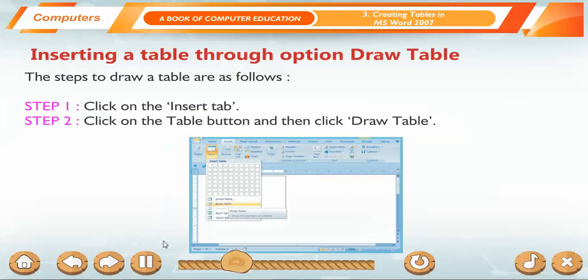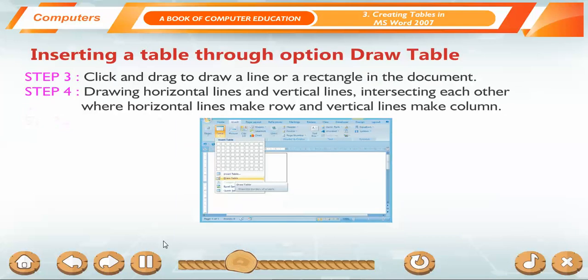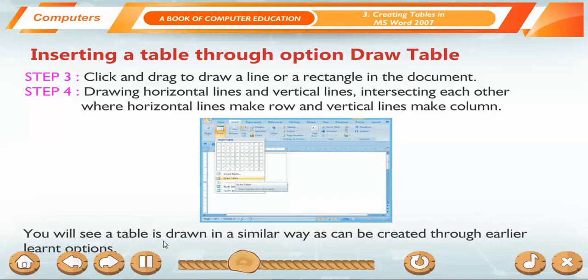The steps to draw a table are as follows. Step 1: Click on the Insert Tab. Step 2: Click on the Table button and then click Draw Table. Step 3: Click and drag to draw a line or a rectangle in the document. Step 4: Drawing horizontal lines and vertical lines intersecting each other where horizontal lines make rows and vertical lines make columns. You will see a table is drawn in a similar way as can be created through earlier learnt options.